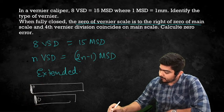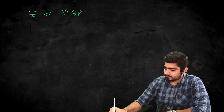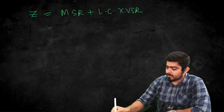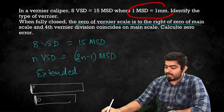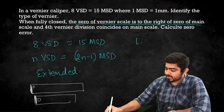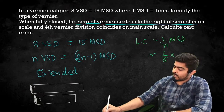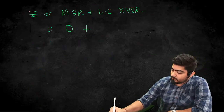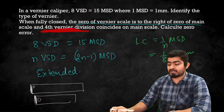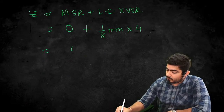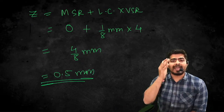To calculate the zero error, use: MSR + (Least Count × VSR). In a positive zero error case, MSR = 0. Least Count = 1/N × MSD = 1/8 mm. The 4th Vernier Division is coinciding, so VSR = 4. Zero error = 0 + (1/8 × 4) = 4/8 = 0.5 mm. This is the zero error for the Extended Vernier Caliper.